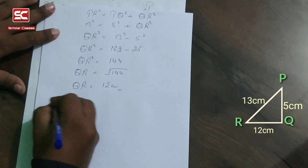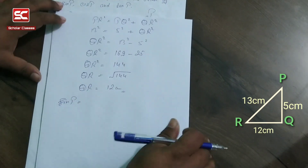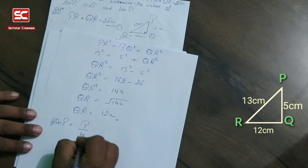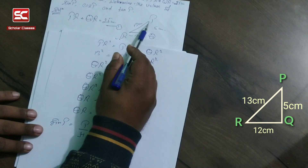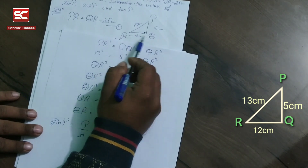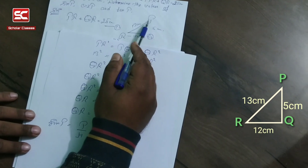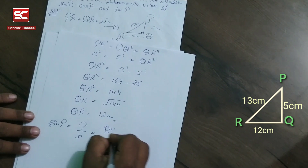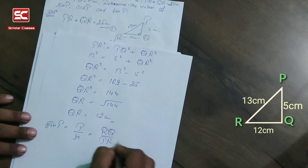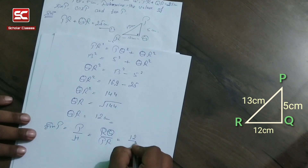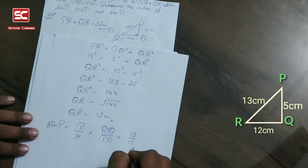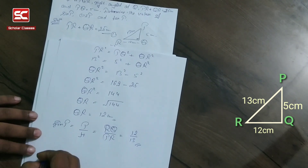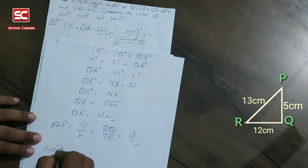Now according to the question we find the value of sin P. We know that sine equals perpendicular upon hypotenuse. Against angle P, the perpendicular is RQ and the hypotenuse is PR. So sin P equals RQ upon PR equals 12 upon 13.